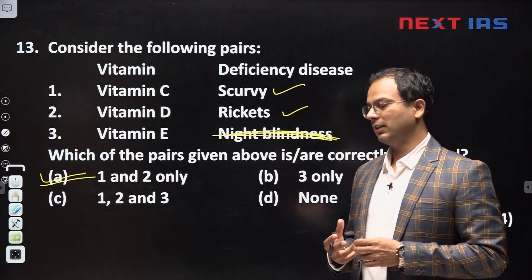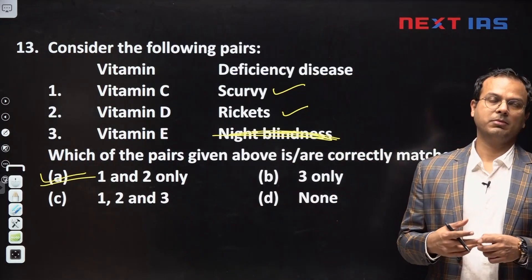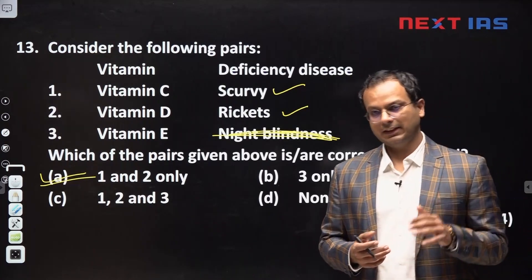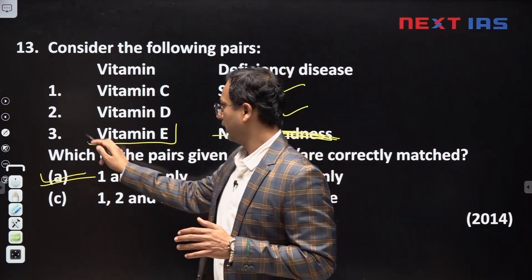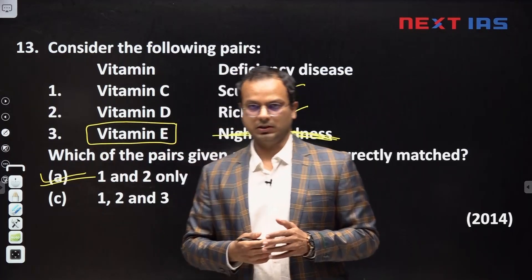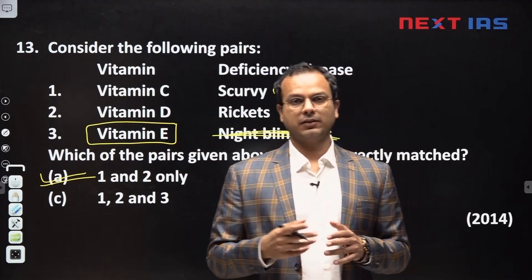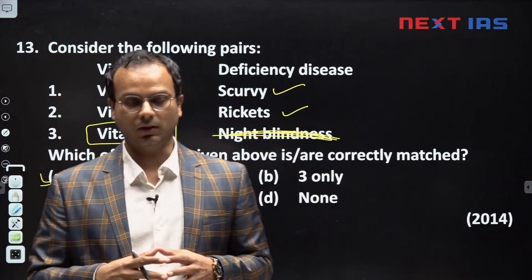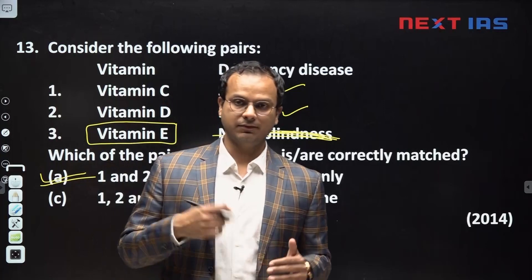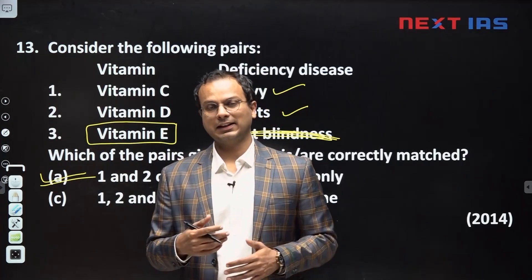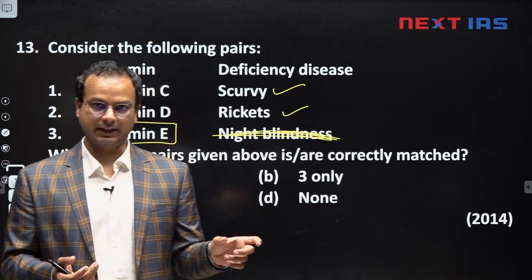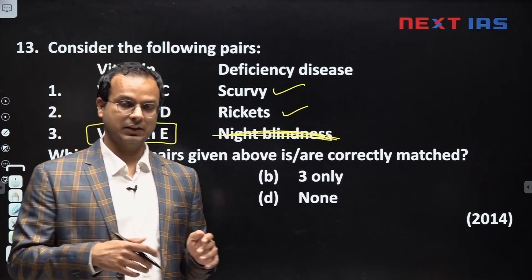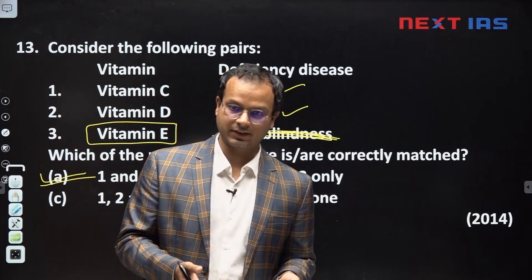This was a very standard question. Generally it is not asked in the UPSC but sometimes in 2014 it was asked. Vitamin E in fact acts as antioxidant in the body. It is found in fresh fruits, vegetables, etcetera. It acts as antioxidant. And what do you mean by antioxidant? Whenever we eat some food, some very highly reactive chemicals are formed. These are called as free radicals. Free radicals are very reactive. They can react with nearby cells and they can damage the cells.